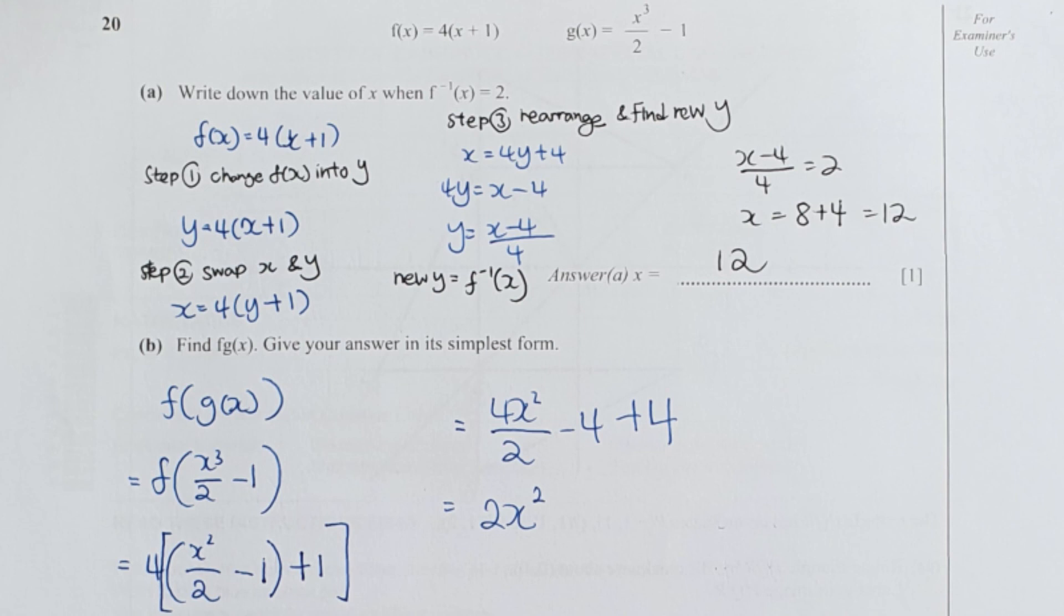For part B, I changed the Gx into the value it carries, which is x cubed over 2 minus 1. Then substitute this x cubed over 2 minus 1 into Fx, x position. So after I run the calculation, I get my final result as 2x squared.